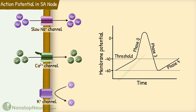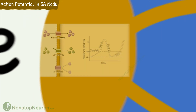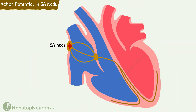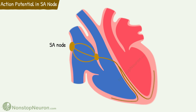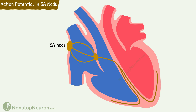The potential reaches the threshold and an action potential is generated again. In this way, the SA node keeps generating impulses on its own. Impulses thus generated spread to the surrounding atrial fibers and to the AV node, and this spread eventually triggers a heartbeat. Thus, the SA node serves as the pacemaker of the heart. This property of being able to generate its own impulse is called automaticity.